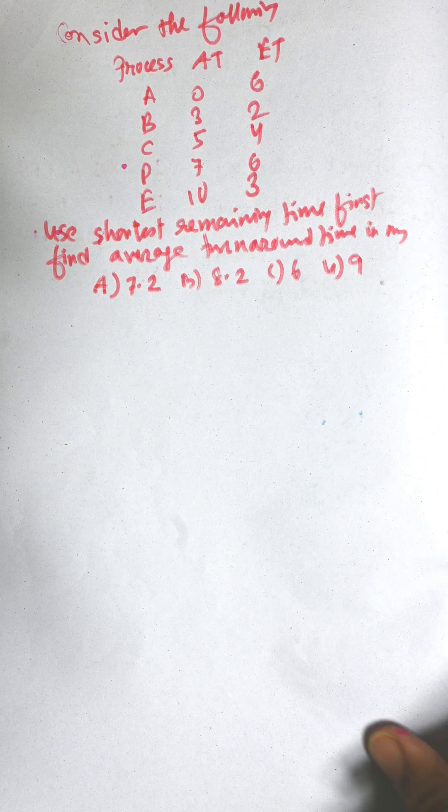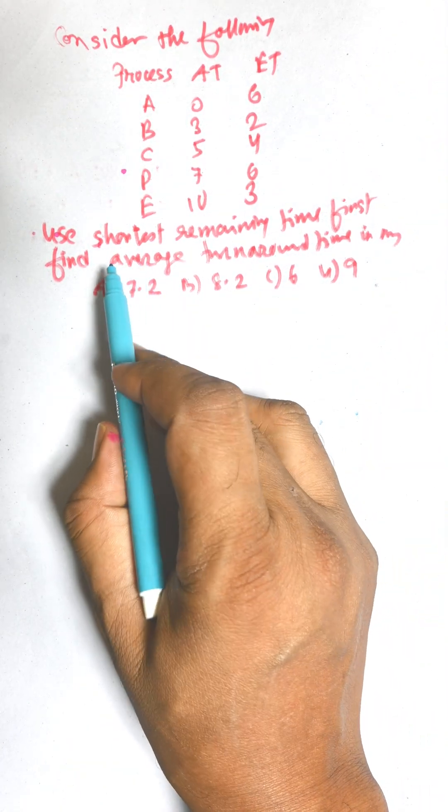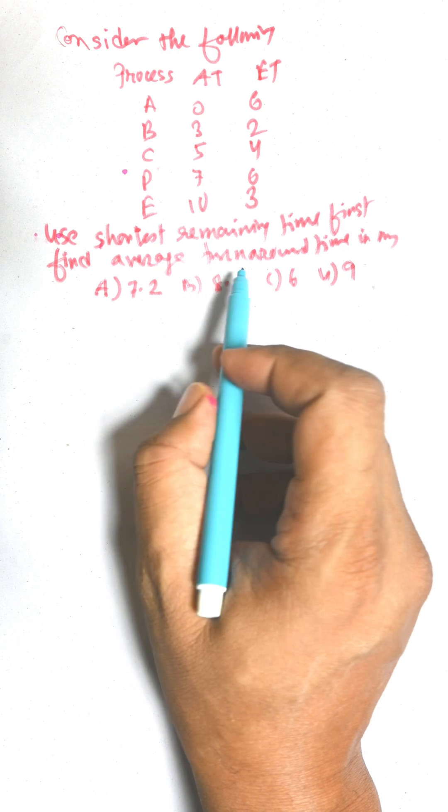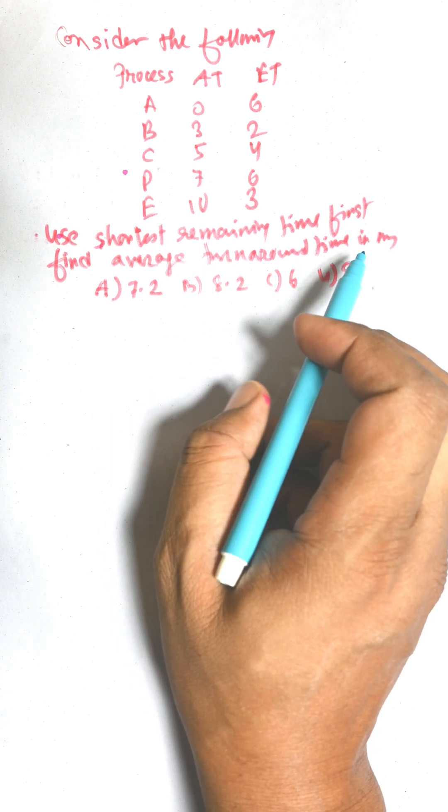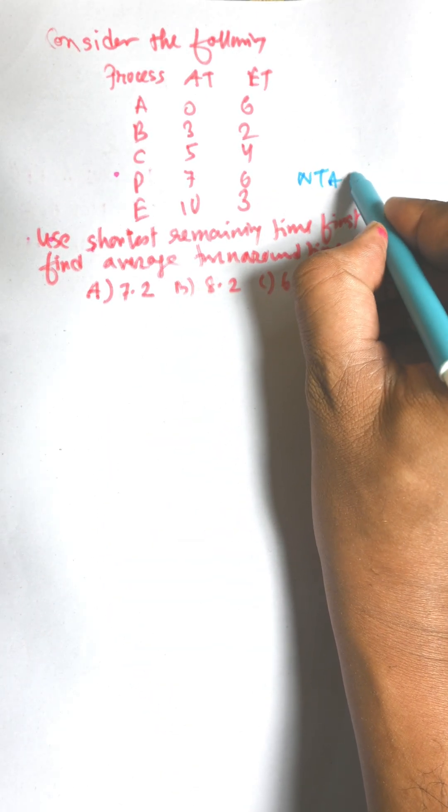Hi everybody, I am going to solve the following problem. There is a table given, we need to find shortest remaining time first algorithm and we need to calculate turnaround time. This is a question from MTNB 2022.